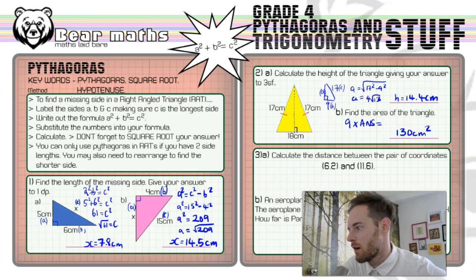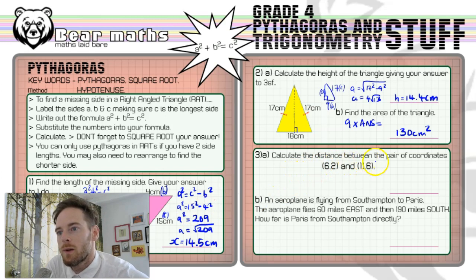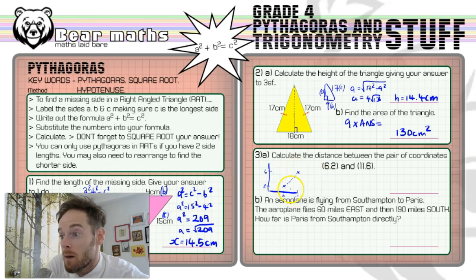Some other uses of Pythagoras then are in question number 3. 3a asks us to calculate the distance between the pair of coordinates, this coordinate and this coordinate. Now, we could do a quick little sketch. Well, everything's positive here, so we just need the positive quadrant of our coordinate grid. 6, 2. Let's go across there and up there. That's about 6, 2. And then 11, 6. So let's say it's about there and about there. So what we've got is the distance between these two points. That's what we're interested in. So we could label them, because let's say that's 2 and that's 6. And then that's 11 and that's 6. Basically, we want to find the length, the distance. And that, because this is a coordinate grid, we end up getting a right-angled triangle here. So if I was to draw that point there to that point there.